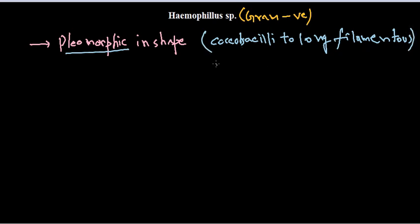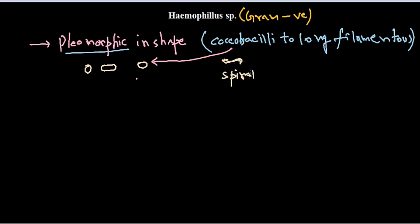They are called pleomorphic because they do not have any defined structure. They can range from coccobacillus — a mixture of coccus (spherical) and bacillus (rod) — to spiral or filamentous structures where bacteria are attached to each other forming a filament visible under a microscope.